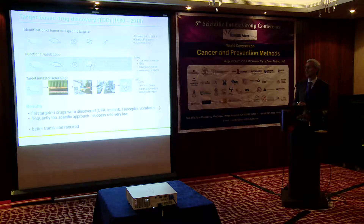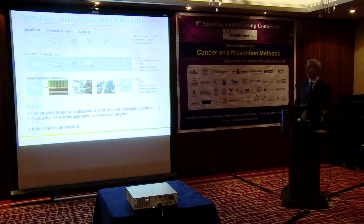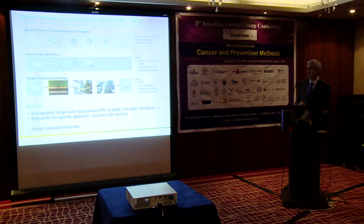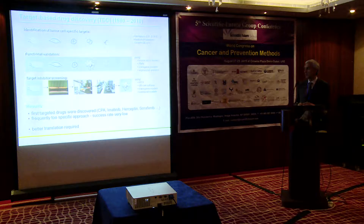With the introduction of molecular biology, research switched to target-based drug discovery. This approach is based on the identification of more or less specific targets on tumor cells, followed by functional validation to show that the target is related to tumor development, and then screening for target inhibitors. Starting around the 1980s, some of the first drugs discovered were anti-hormones — CPA was the first anti-androgen — then imatinib, herceptin, and sorafenib. This is a very interesting approach, but the success rate was still very low.